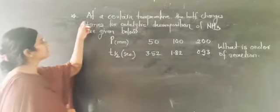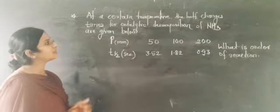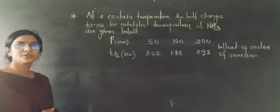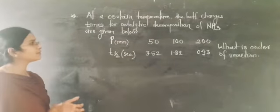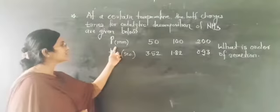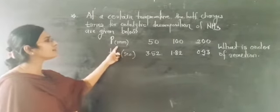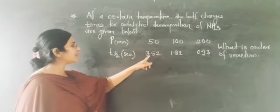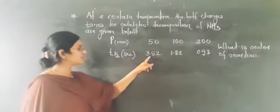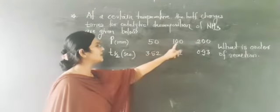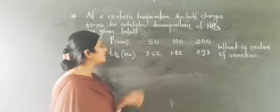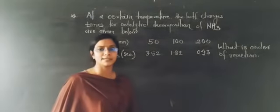The numerical states: at a certain temperature, the half-life times for the catalytic decomposition of ammonia are given. The pressure and T½ values are: for pressure 50, T½ is 3.52; for pressure 100, T½ is 1.82; and for pressure 200, T½ is 0.93.